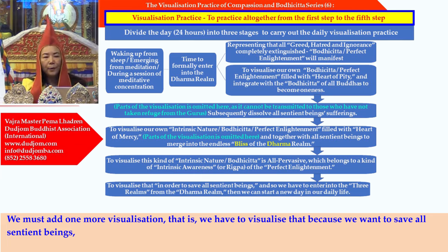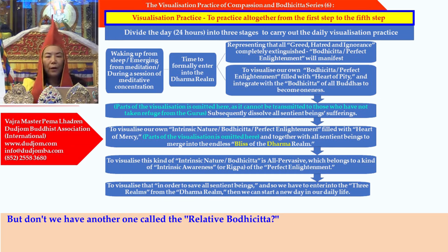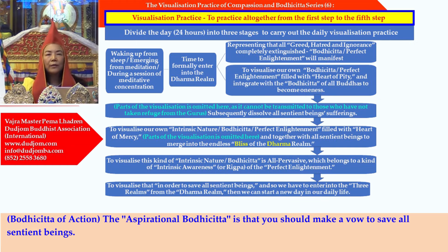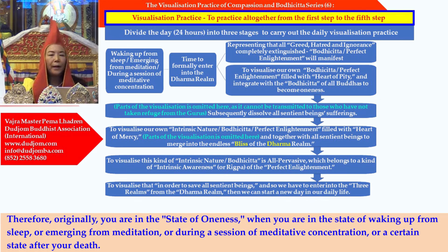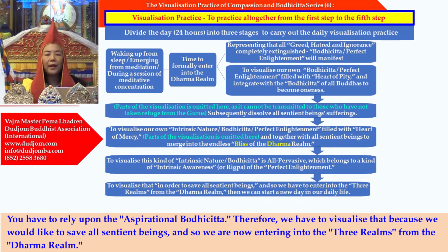The relative bodhicitta is divided into two parts: one is called the aspirational bodhicitta, and the other is called the action bodhicitta. The aspirational bodhicitta is that you should make a vow to save all sentient beings. Therefore, originally you are in the state of oneness — when you are in the state of waking up from sleep, or emerging from meditation, or during a session of meditative concentration, or at a certain state after death. But in your daily life, you are in a dualistic state. So when you are practicing the state of oneness, how can you enter into the dualistic state and continue to practice? You have to rely upon the aspirational bodhicitta.